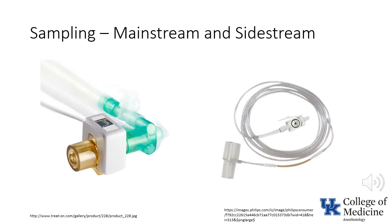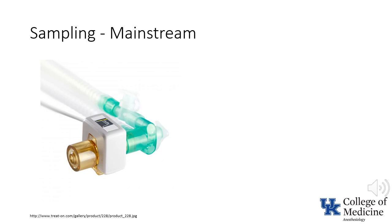There are two different ways to sample respiratory gas for the purposes of measuring exhaled carbon dioxide: mainstream and sidestream. With mainstream capnometry, the measurement is actually performed on gas which is in the anesthesia circuit.